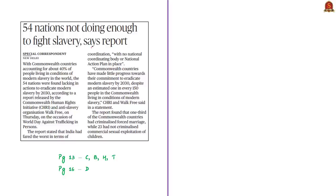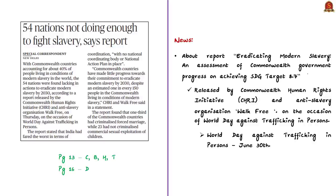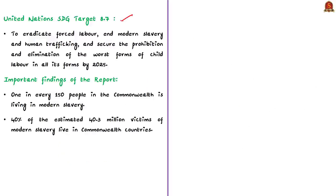This news article references a report titled 'Eradicating Modern Slavery: An Assessment of Commonwealth Government Progress on Achieving SDG Target 8.7.' The report was released by the Commonwealth Human Rights Initiative in partnership with Walk Free — an initiative of the Minderoo Foundation, an international human rights organization working to end modern slavery. The report was released on the occasion of the World Day Against Trafficking in Persons, observed on July 30th. SDG Target 8.7 seeks to eradicate forced labor, end modern slavery, end human trafficking, and eliminate worst forms of child labor by 2025.